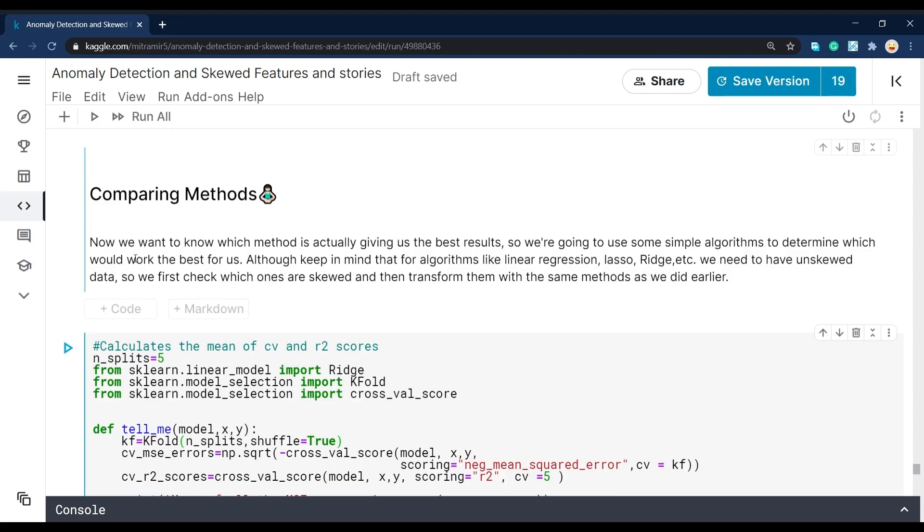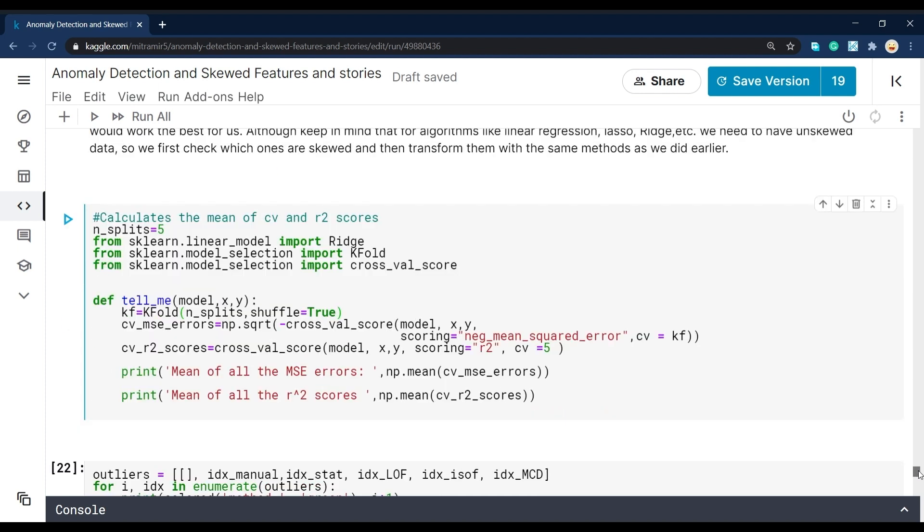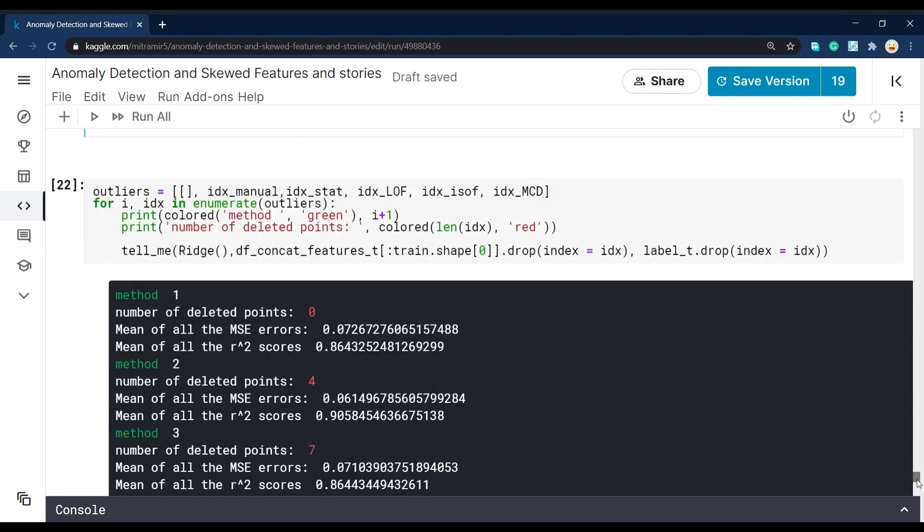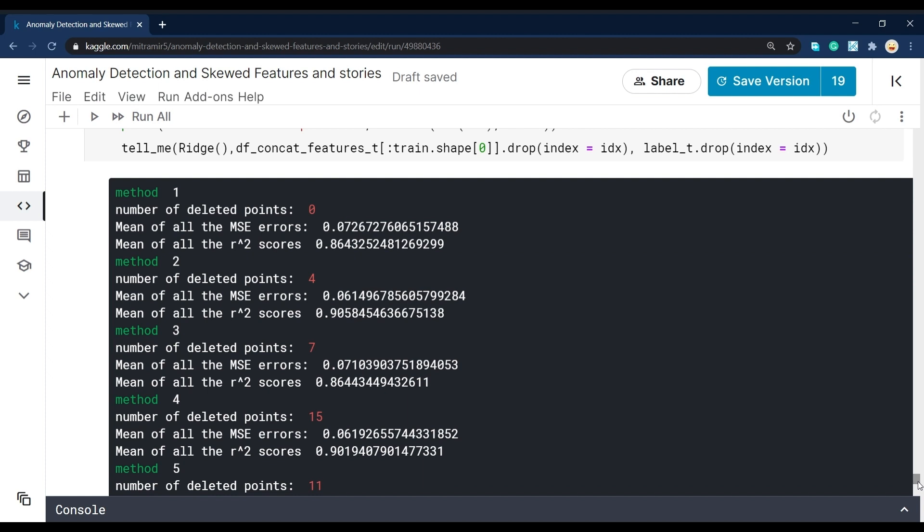So these were the examples I wanted to show you as different methods of detecting anomalies. But here what is really important at the end is to compare these methods and see which ones work the best. For that, we can actually use something called cross-validation that I'm sure so many of you are familiar with. Firstly, we choose a model, or even a simple model, something like ridge regression. Then we start dropping different groups of outliers detected by different methods. Then we use cross-validation and see which ones give us the highest R2 score or the lowest error.